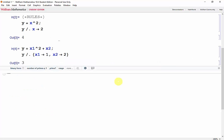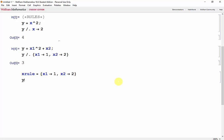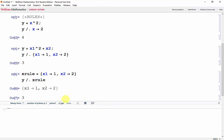We can even define the vector of rules separately. So let's set xrule equal to x1 which goes to 1 and x2 which goes to 2. And then y with xrule, Shift-Enter. And we get the same answer.